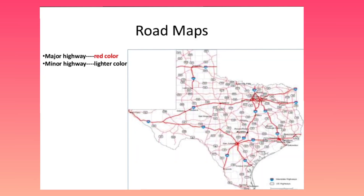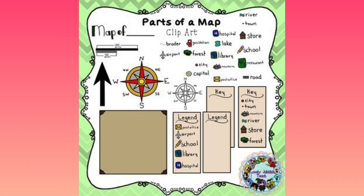Next, we will discuss about road map. A road map gives us information about the connectivity of different roads — cities, towns, and villages from one place to another. In this map, major highways are indicated by red color and minor highways are indicated by lighter color. So we get information related to roads and national highways from a road map.